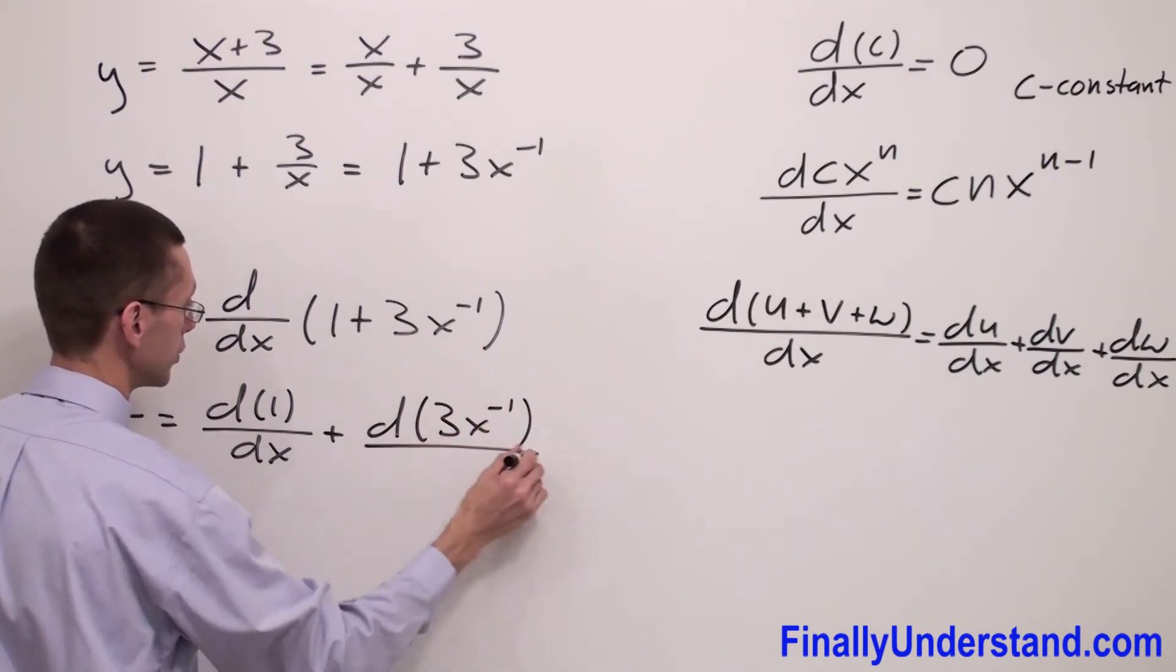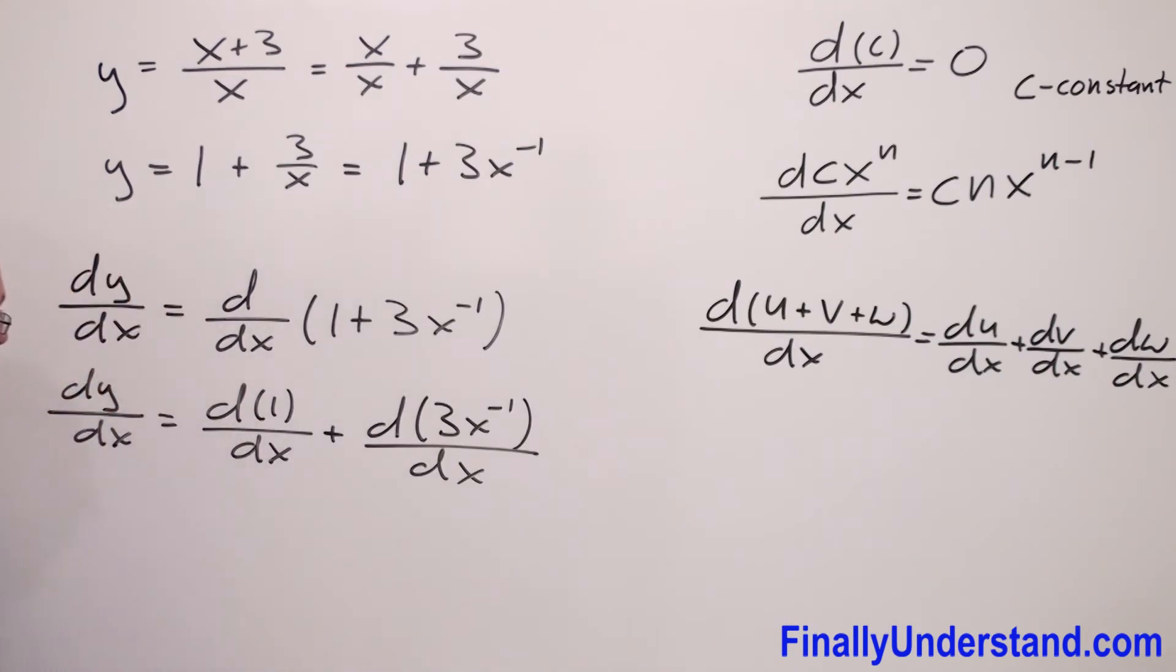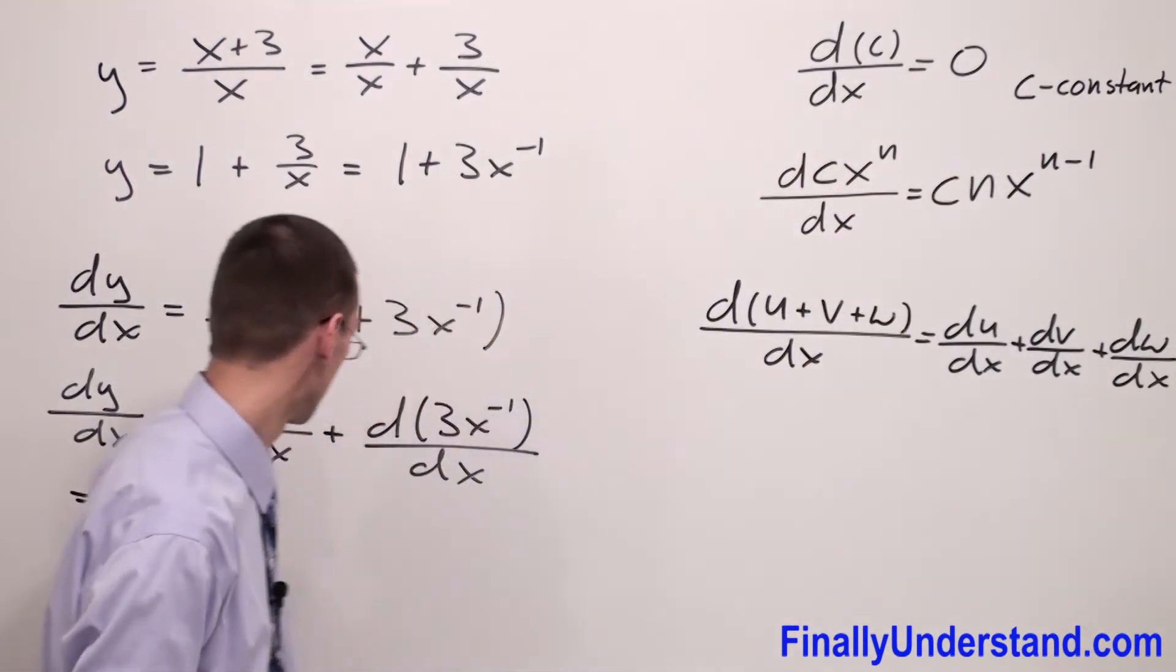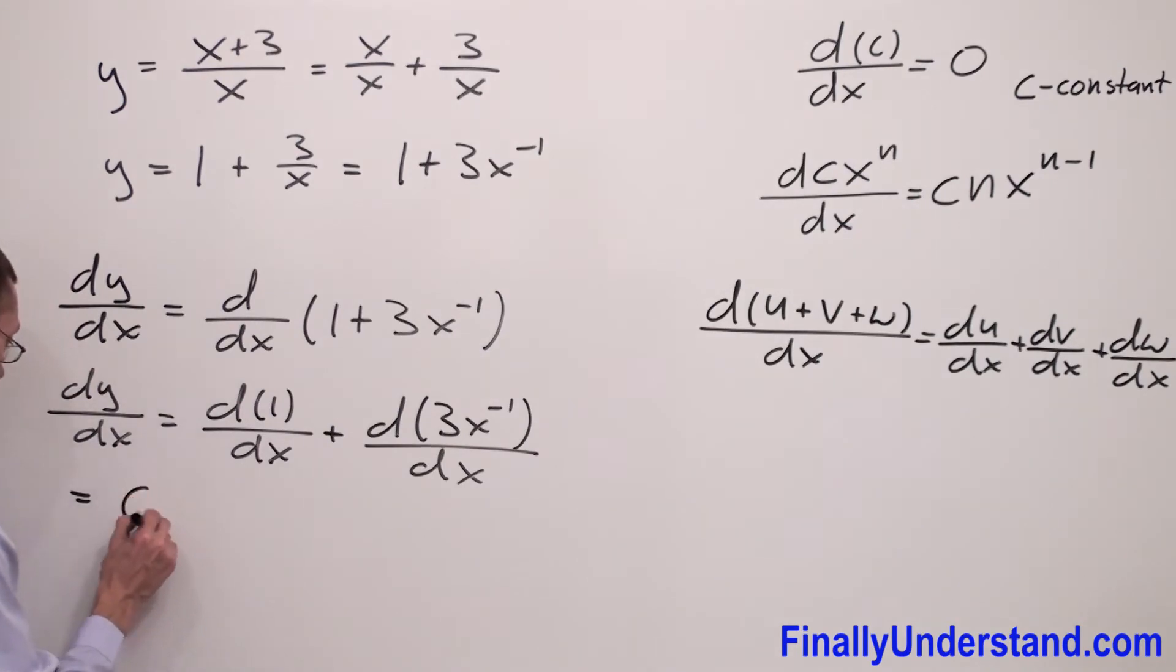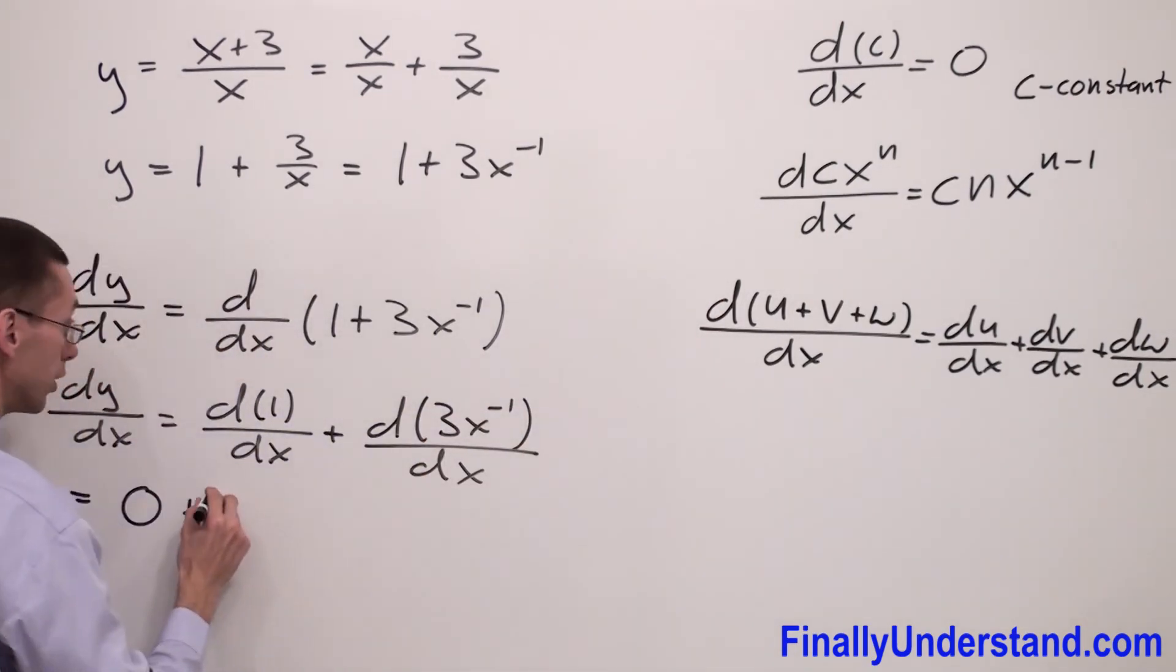So this is equal, derivative of constant is equal 0, okay. So that's why I'm going to write 0 over here and I have plus. Now I'm supposed to use this formula. I have constant 3 times negative 1 x negative 1 minus 1.